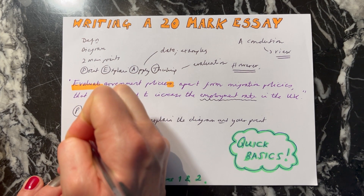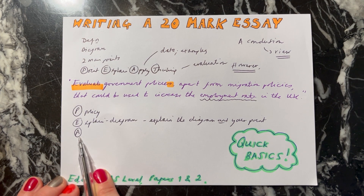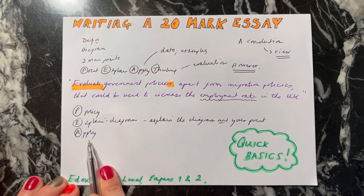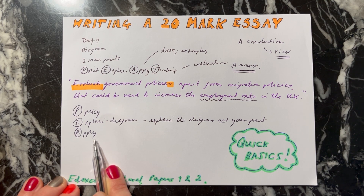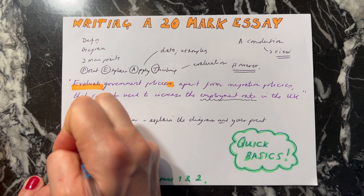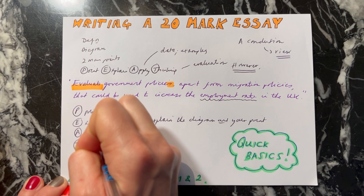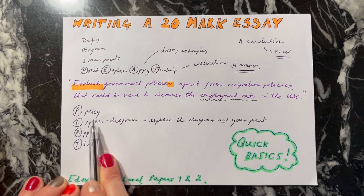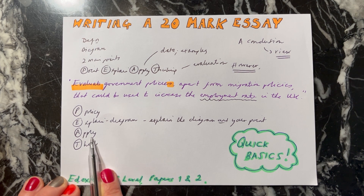You then need to do some application. This could be using something in the data that you've been given — perhaps there was some information about types of improvements in education happening in the UK. You may also use your own examples. For instance, you might say the government could spend more money in secondary schools, particularly focusing on tech-related subjects like maths and computer science, so that people can get jobs which are becoming more available in the UK. Then you need to think about why that point or policy might not work.